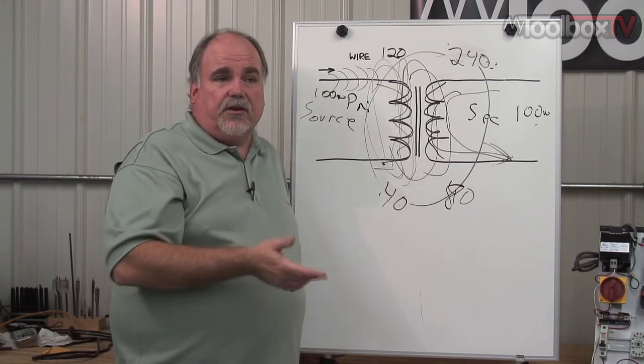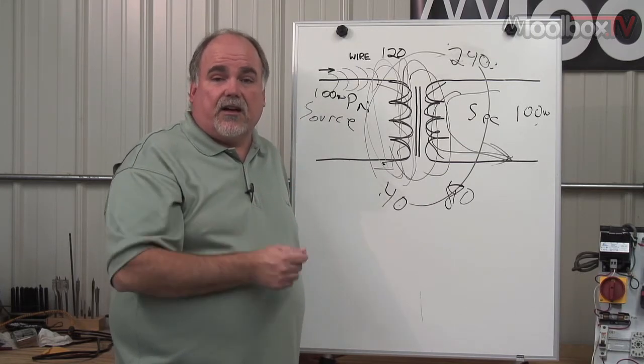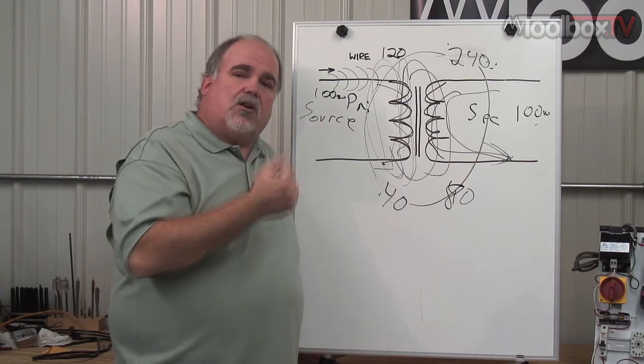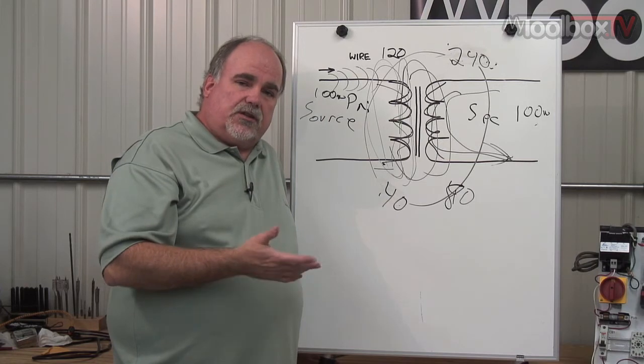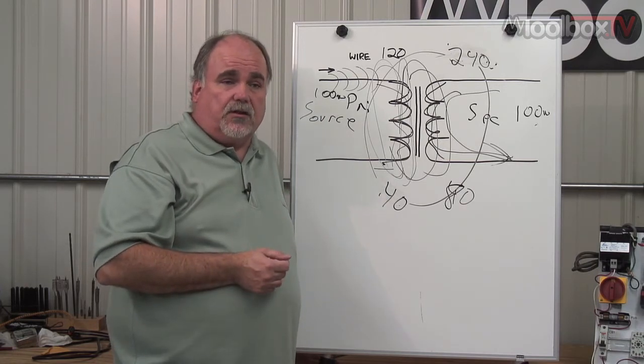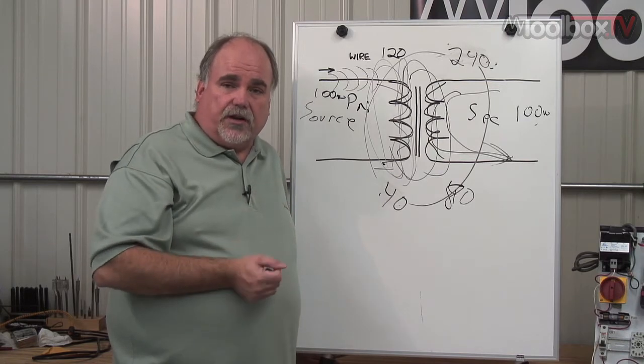They step that voltage way up because the current is going to be small. If the current's small, you can use smaller wires. You can have less heat loss on the transmission lines.